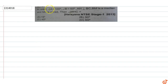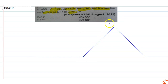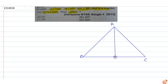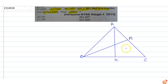In this question, triangle ABC has angle A equal to 100 degrees, angle B equal to 50 degrees. AH is perpendicular to BC, BM is a median, and MH is joined. We need to find angle MHC.